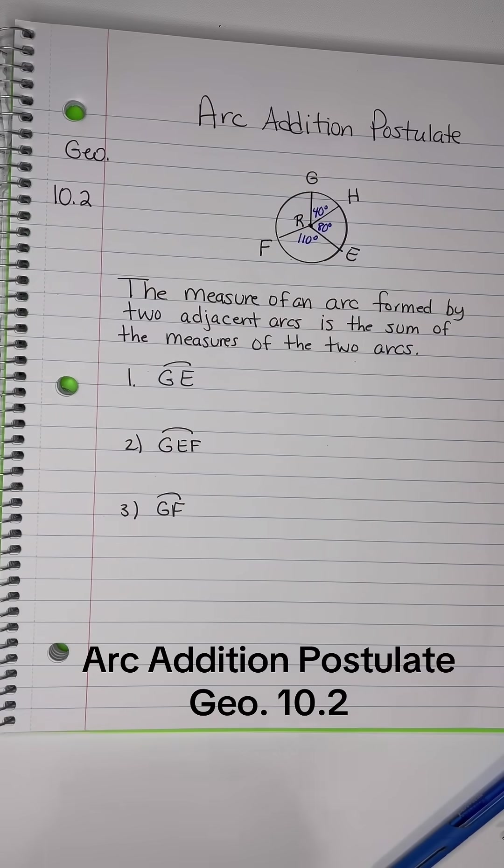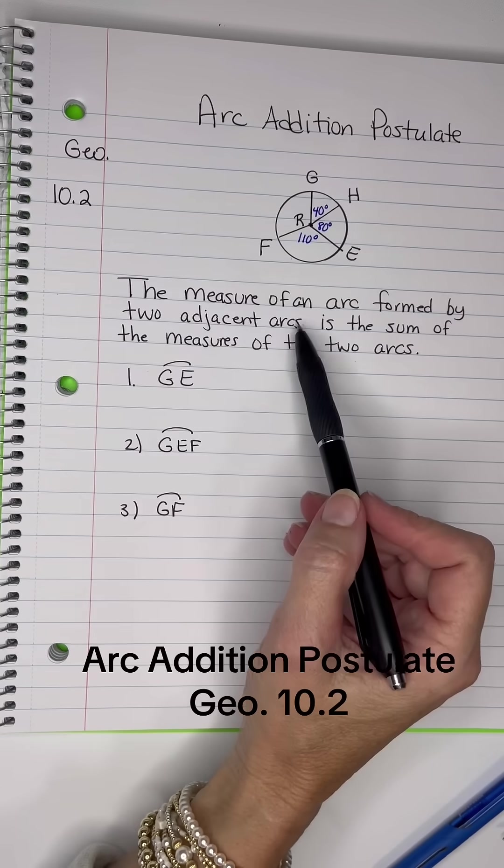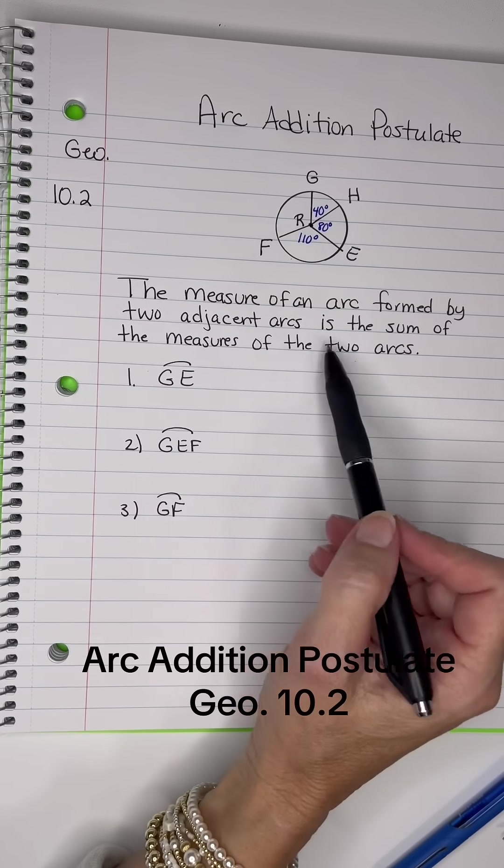All right, let's use the arc addition postulate, which states the measure of an arc formed by two adjacent arcs is the sum of the measures of the two arcs.